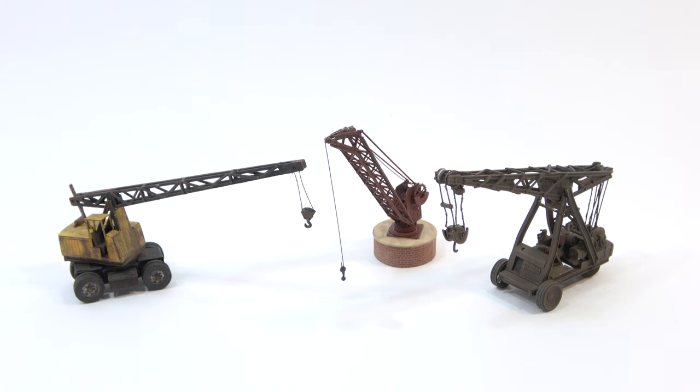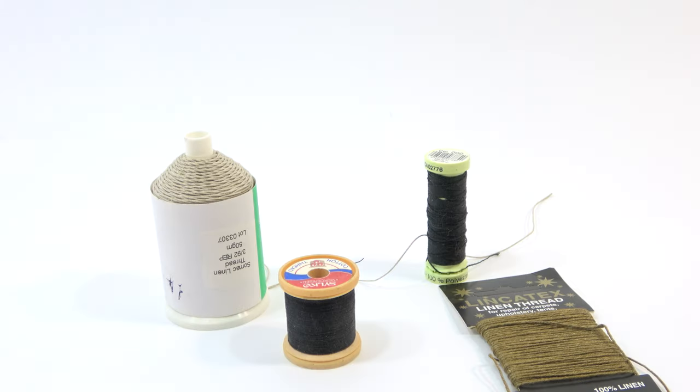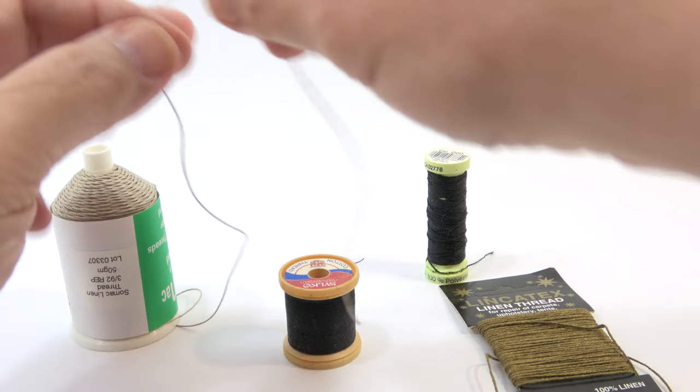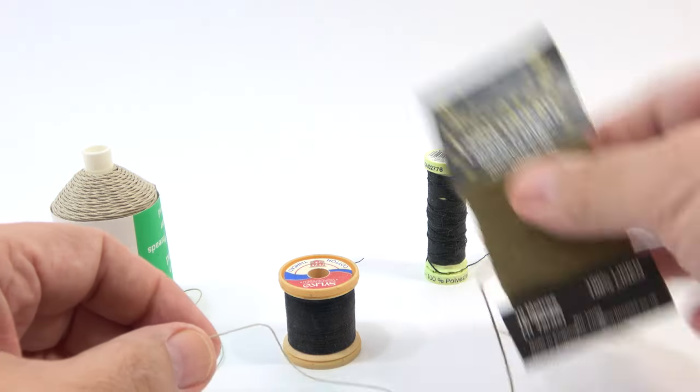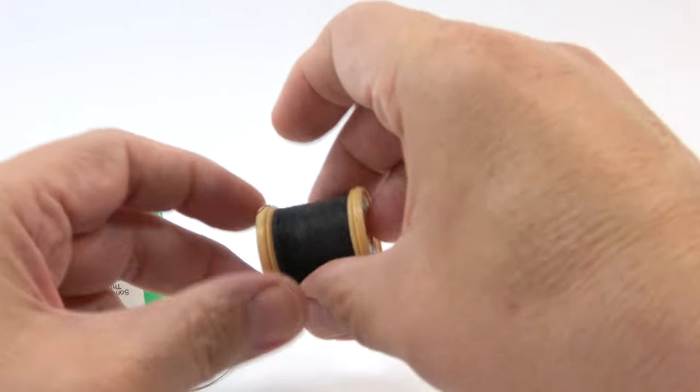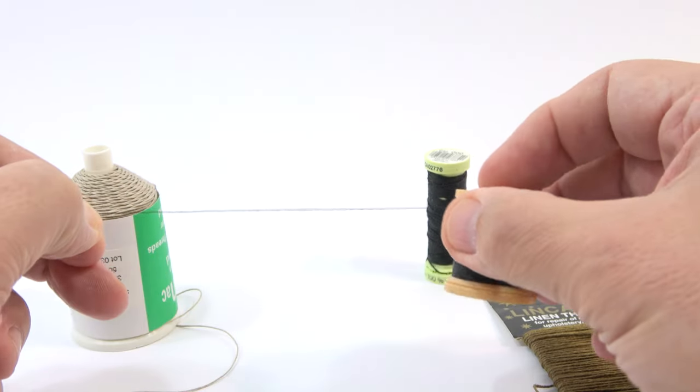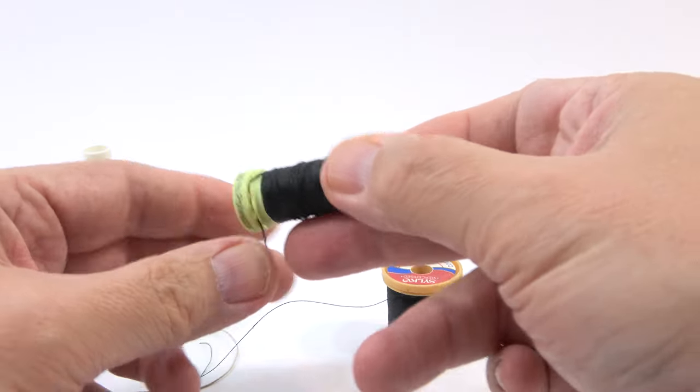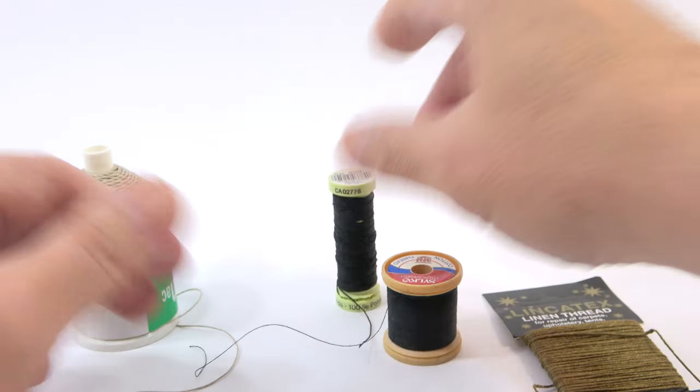But what's the best way of doing that? The obvious stuff to use is thread or all sorts of fine thread. I've got a little bit of a selection here of thicker threads, cotton thread from your sewing kit and even button thread which is just a bit thicker and stiffer.